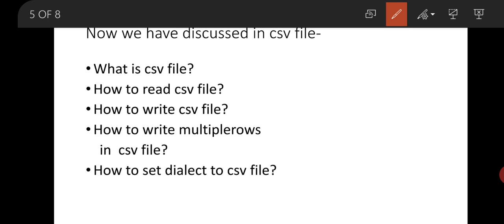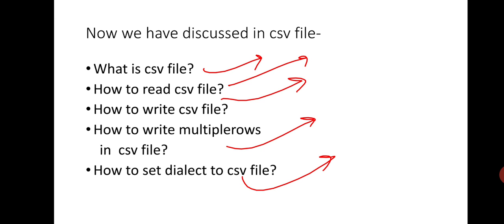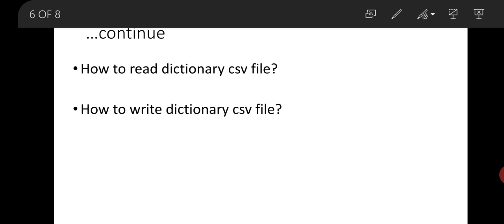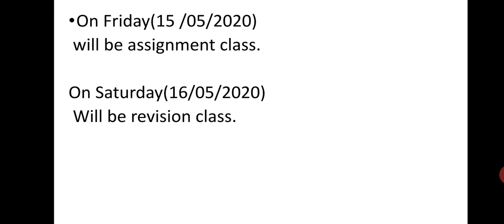I hope this is easily understood. Now let's summarize what we have discussed in the CSV file topic: what is a CSV file, how to write a CSV file, how to read a CSV file, how to write multiple rows in a CSV file, how to set a dialect in a CSV file, how to read a dictionary CSV file, and how to write a dictionary CSV file. That covers most things about CSV files.